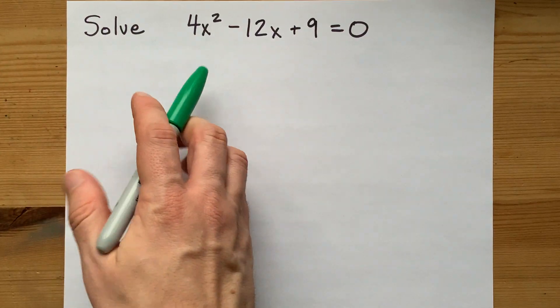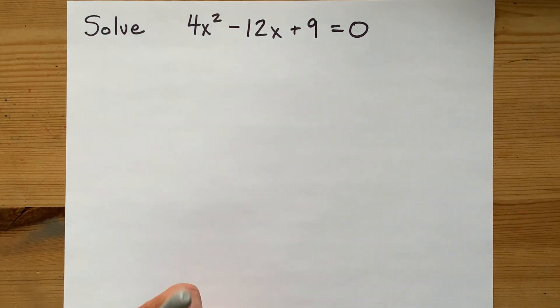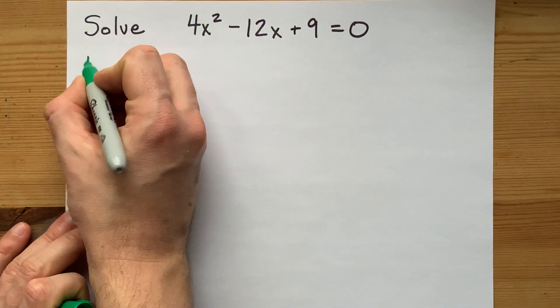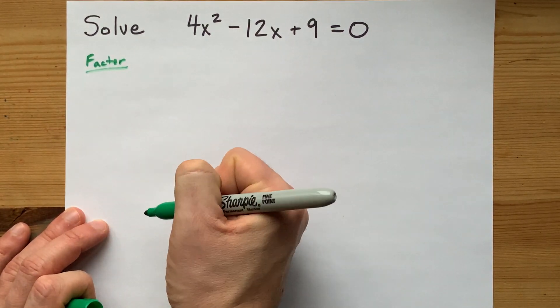How do you solve the quadratic equation 4x squared minus 12x plus 9 equals 0? Well, the first thing when you're asked to solve a quadratic equation that I like to do is to factor if you can.